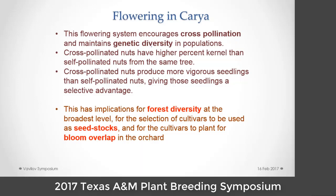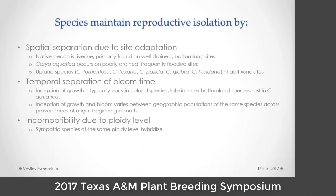We know that cross-pollinated nuts have higher percent kernel, make bigger nuts, and make more vigorous seedlings, which gives them an advantage in establishment. This has implications for forest diversity at the broadest level and for the selection of cultivars to be used as seed stocks because it impacts vigor in the nursery. It's also important in planting orchards for bloom overlap in order to have an adequate crop.